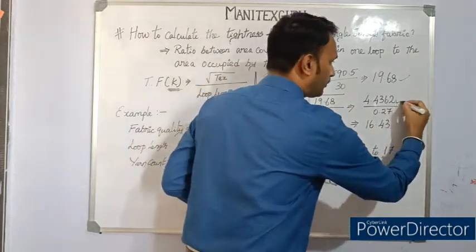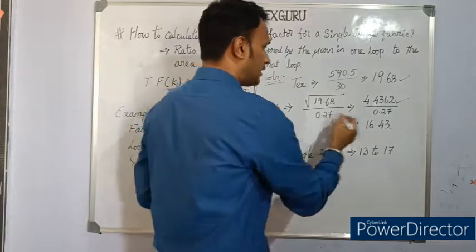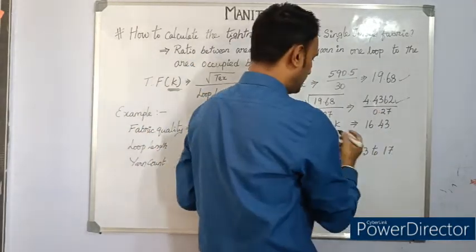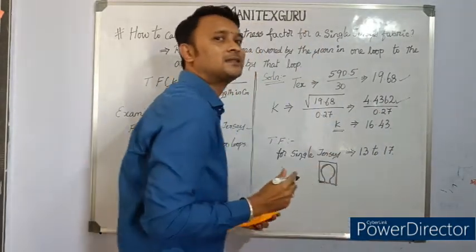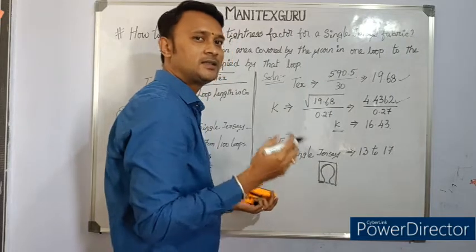So finally the tightness factor for a single jersey 30s count single jersey knitted with 27 cm loop length is 16.43.